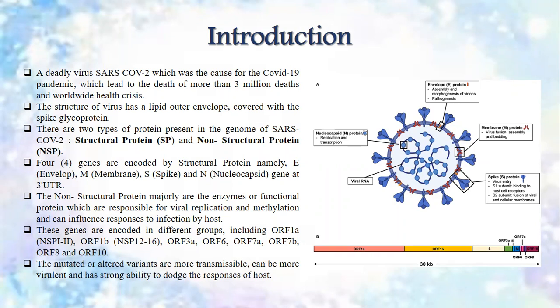The non-structural proteins are majorly enzymes or functional proteins responsible for viral replication and methylation, and can influence responses to infection by the host. These genes are encoded in different groups including ORF1A, ORF1B, ORF3A, ORF6, ORF7A, ORF7B, ORF8, and ORF10. The mutated or altered variants are more transmissible, can be more virulent, and have a strong ability to dodge host responses, posing greater challenges in clinical and diagnostic management. However, not all mutations lead to major protein variations or altered virus infectivity.